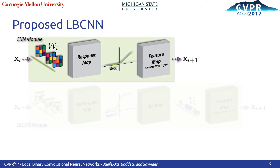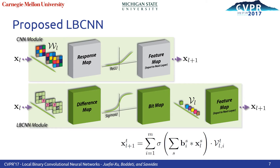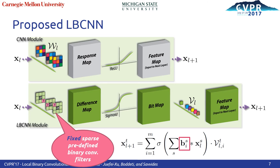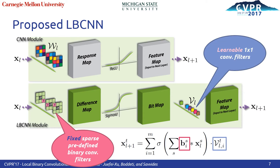In a standard CNN layer, the input volume is convolved with learnable real-valued convolutional filters and then goes through a nonlinearity. In LBCNN, the input volume is convolved with fixed, sparse, predefined binary convolutional filters that are not learned, followed by a nonlinearity. We then invoke learnable one-by-one convolutional filters for combining the various bitmaps as the final feature map ready for the next layer.